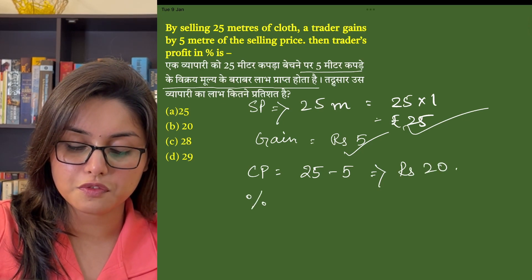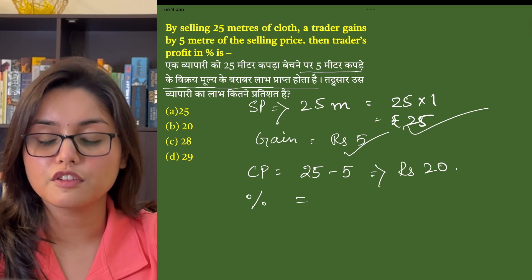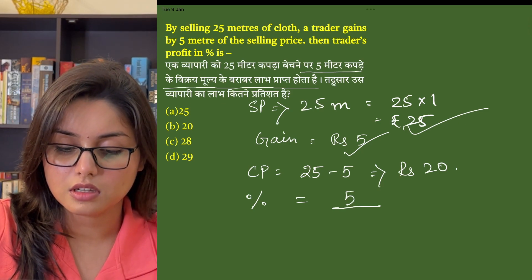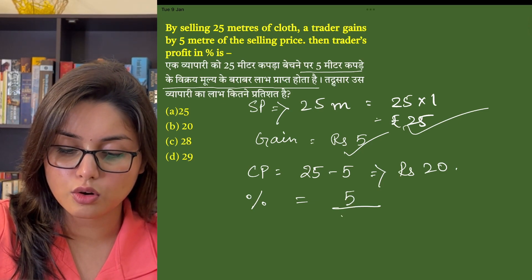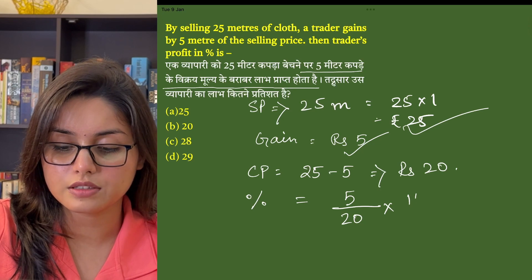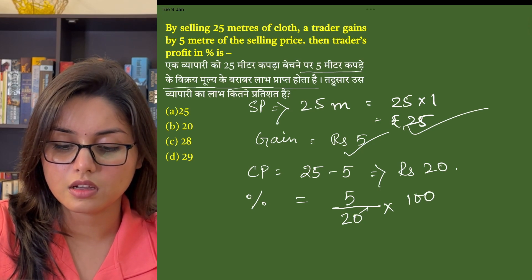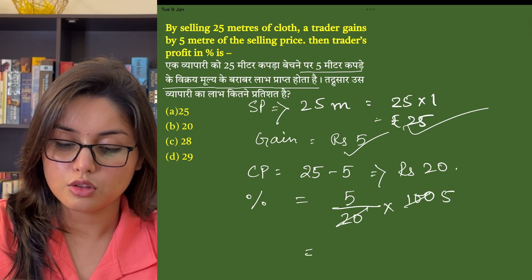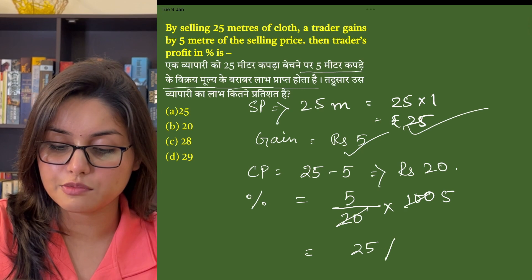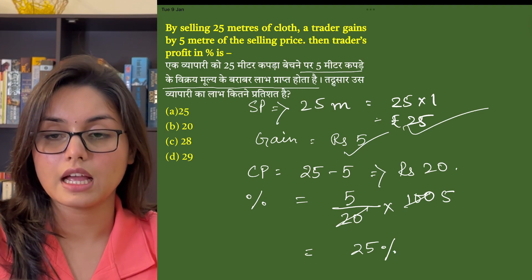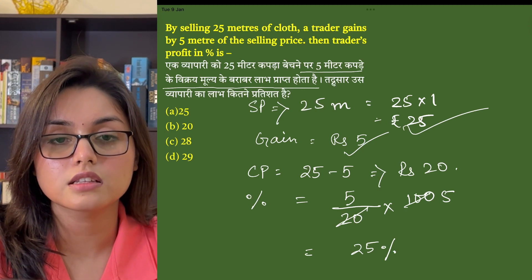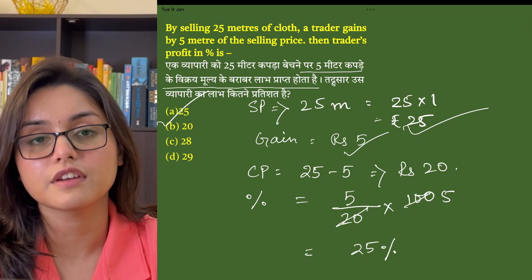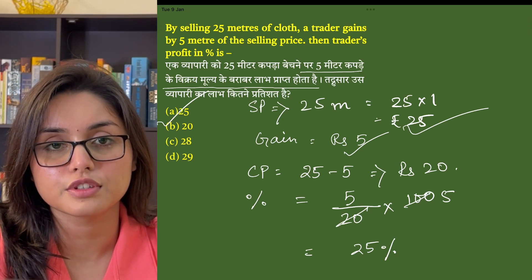We asked how much profit percentage. So, profit divided by cost price — that is 5 into 100 divided by 20. Profit percent is 25%. So the answer is option A, that is 25% profit.